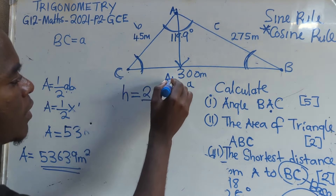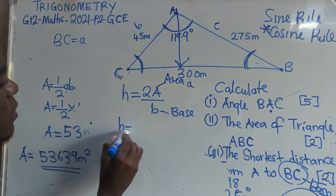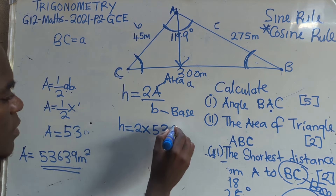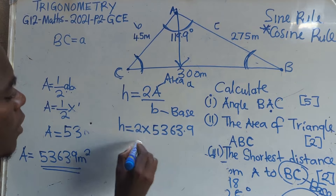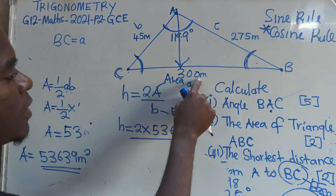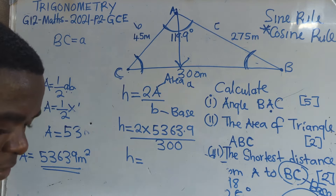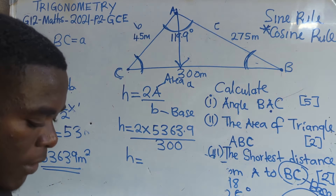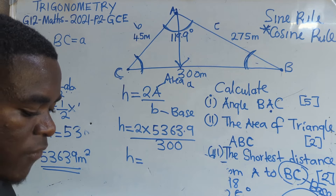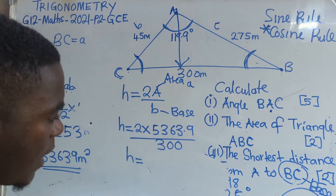So you substitute: shortest distance is equal to 2 times the area, which is 5363.9, over the base BC, which is 300. You put your 300 there. So which means shortest distance is equal to — get your calculator. You say times 2: 2 times 5363.9 gives 10,727.84. You divide that by 300 after seeing the answer. Don't go direct — these are the mistakes that we get to make.